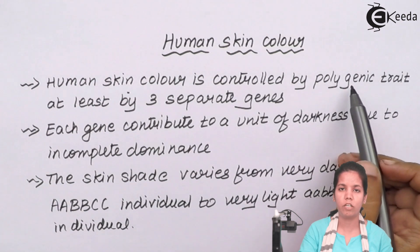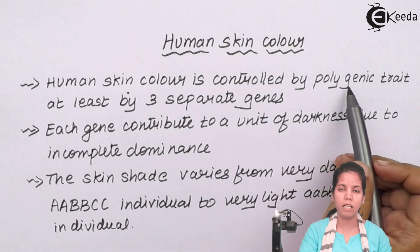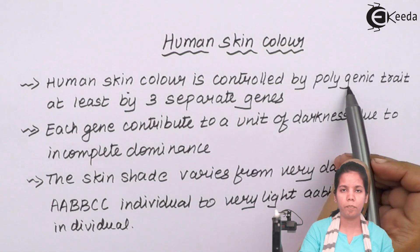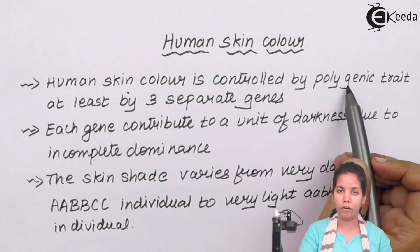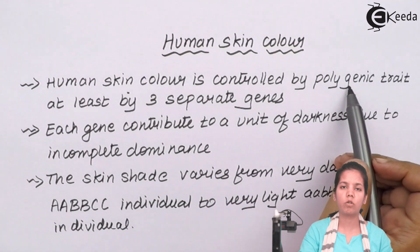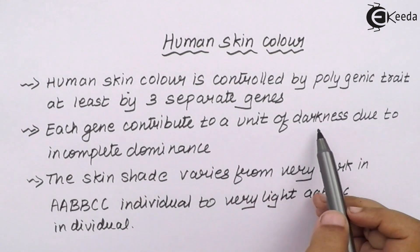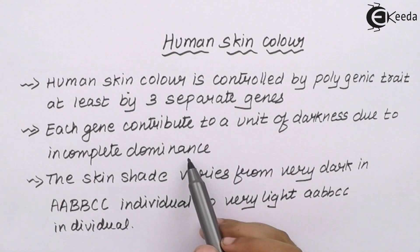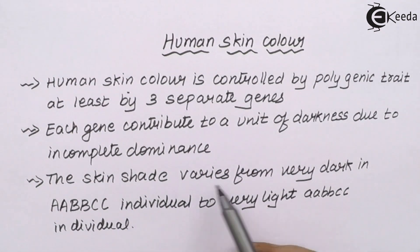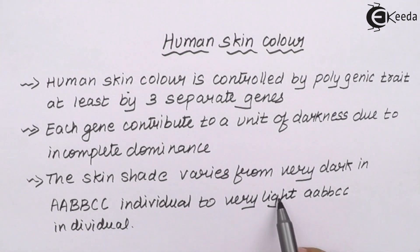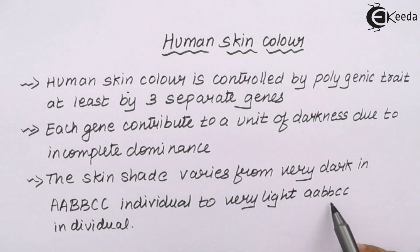Skin color is a particular trait or characteristic present in human beings. This character is decided by a set of genes or alleles that you get from your parents — both your mother and father. Half the set you get from your father and half from your mother. That is why human skin color is termed a polygenic trait. Each gene contributes a unit of darkness due to its incomplete dominance. The skin shade varies from very dark, denoted as capital A capital A, capital B capital B, capital C capital C, to very light, denoted by small alphabets.